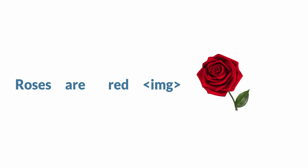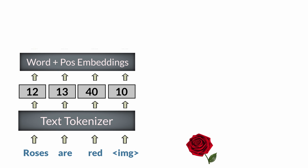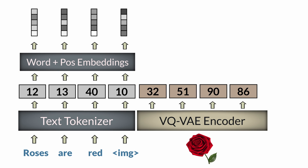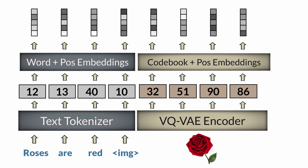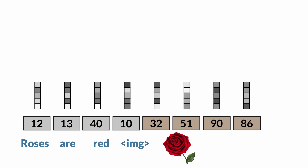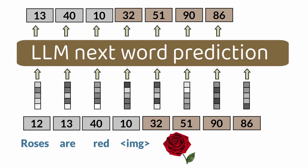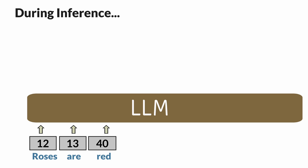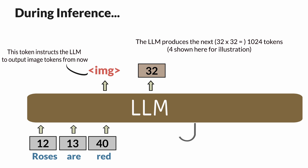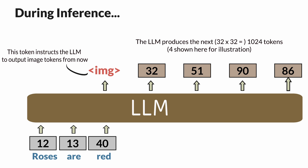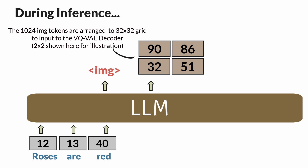Now it's time to discuss how we use the VQVAE to train an LLM to generate images. For a sequence like 'Roses are red' followed by an image of a rose, the text parts are encoded from the LLM's text vocabulary with word and positional embeddings. The image first goes through the VQVAE encoder to get its coded sequence; these image tokens are encoded using the codebook embeddings with positional encodings added. We train on next-token prediction in this unified space, and during inference, the model generates image codes one by one, which are then decoded into an image.